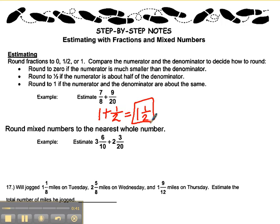If you are estimating with mixed numbers, you want to round to the nearest whole number. For example, 3 and 6 tenths. 6 tenths is closer, it would round up to the whole number, so it would be 4, plus 2 and 3 twentieths. 3 twentieths is closer to 0, so 2 and 3 twentieths would round to 2. 4 plus 2 equals 6.